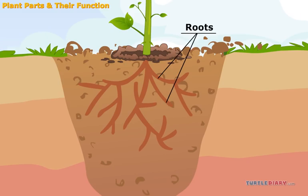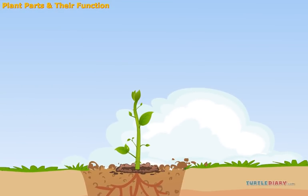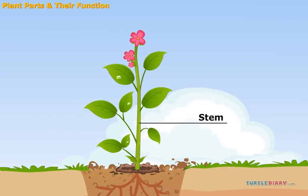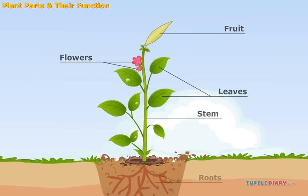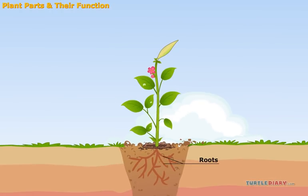The root absorbs or soaks up water and nutrients or food in the soil. This water and food goes up into the stem or trunk of a tree and out to the leaves, flowers, and fruit. Roots also grip the earth and keep the plant from falling over.